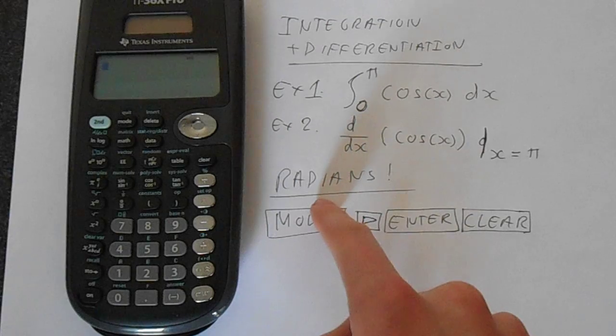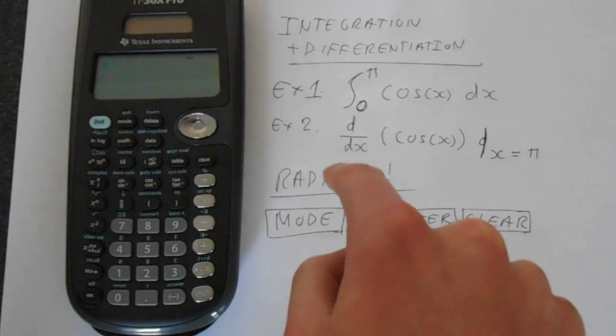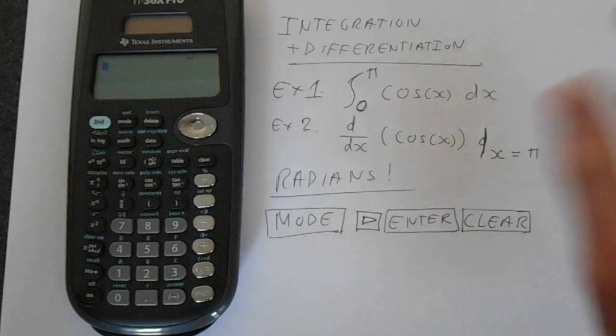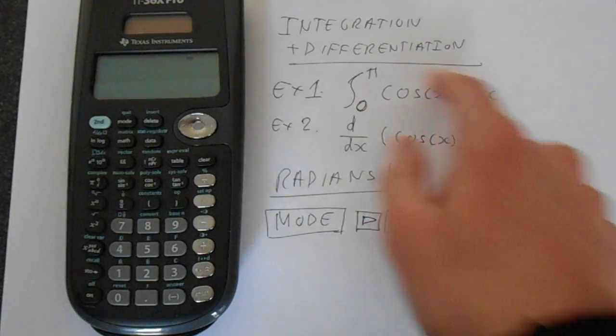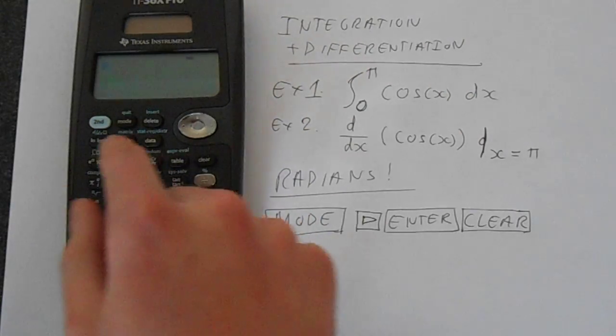The first thing we have to make sure before we do these examples is that the calculator is set in radians. Otherwise you're likely to get confused.